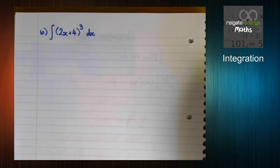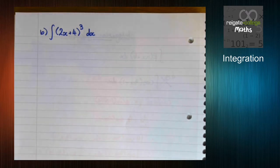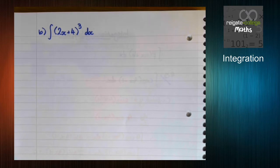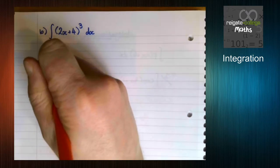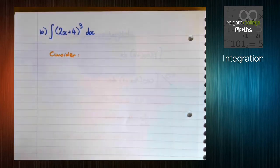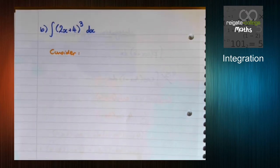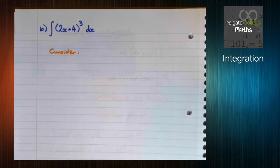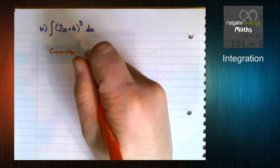With this next example here, we can see that we're integrating 2x plus 4 all cubed. So we need to think again what would differentiate to give us something where this is involved. Some of you may already be able to spot the patterns, spot the trick, but we'll go through it a little bit longer method again.